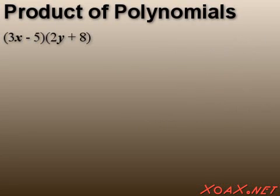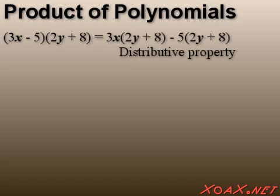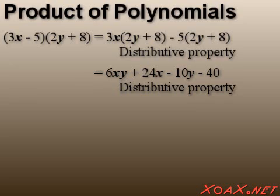To multiply two polynomials, we can distribute each of the terms of the first polynomial over the terms of the second. For example, if we have 3x-5 and 2y+8, then we begin by multiplying 3x by 2y and 8 to get 6xy and 24x. Then we multiply -5 by 2y and 8 to get -10y and -40.